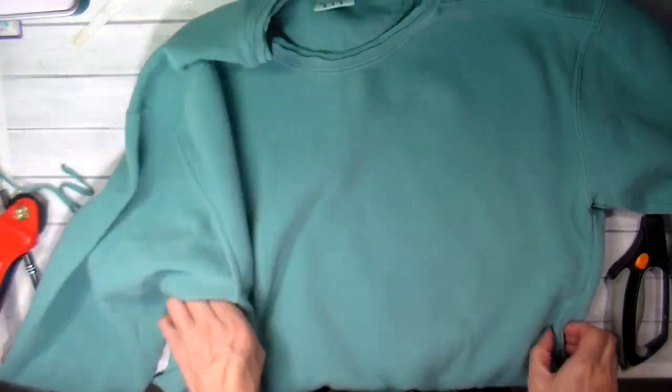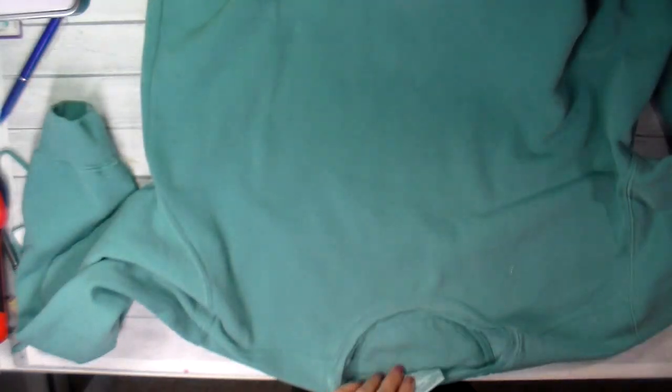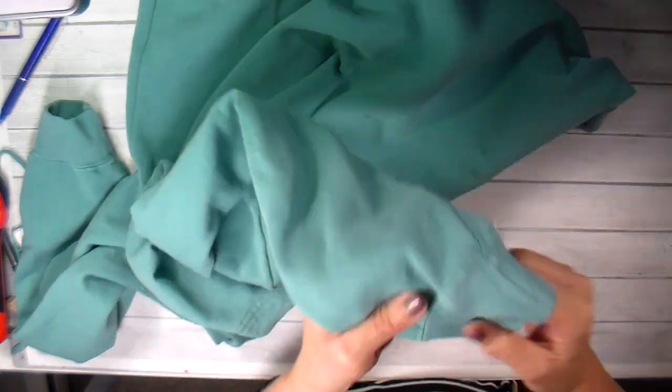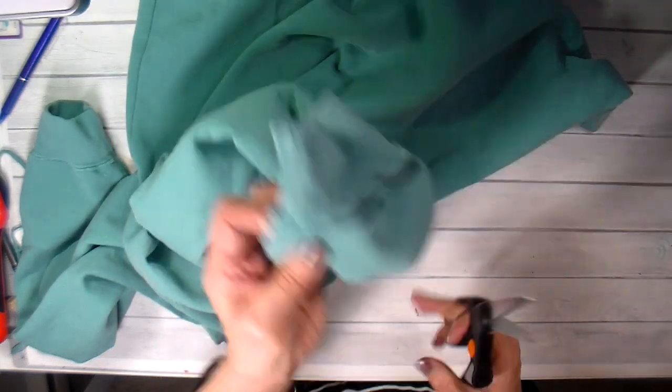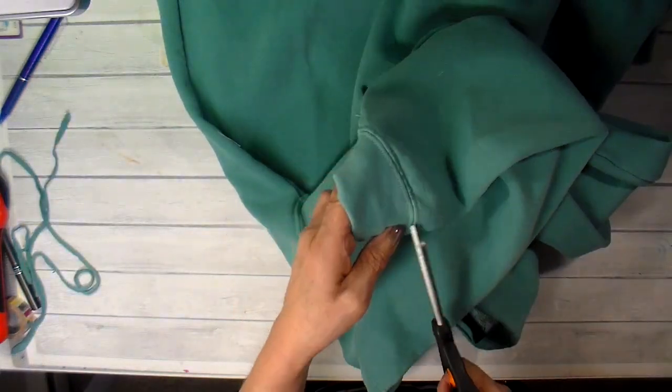I'm finding the center front here and marking that. I'm going to be putting a slit on this neck. This just gives it so it's easier to put over your neck, and then cutting off the cuffs. I'm cutting those cuffs right above the seam.